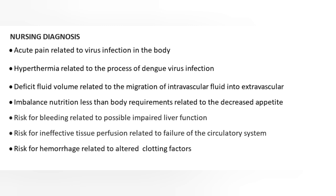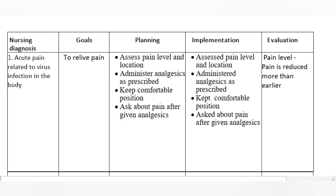Nursing Diagnosis 1: Acute pain related to virus infection in the body. Goals: To relieve pain. Planning: Assess pain level and location. Administer analgesics as prescribed. Keep comfortable position. Ask about pain after giving analgesics.